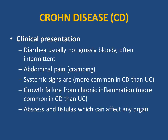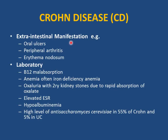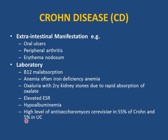Extra-intestinal manifestations of Crohn disease: oral ulcers — if a child presents with recurrent oral ulcers and failure to thrive, keep Crohn disease in your differential. Peripheral arthritis, erythema nodosum (tender skin rash on the shin). Laboratory findings: B12 malabsorption causing B12 deficiency anemia with neurological disorder; iron deficiency anemia; oxaluria causing kidney stones from rapid oxalate absorption; elevated ESR; hypoalbuminemia — always check albumin. ASCA is elevated in 55% of Crohn cases and is more negative in ulcerative colitis.